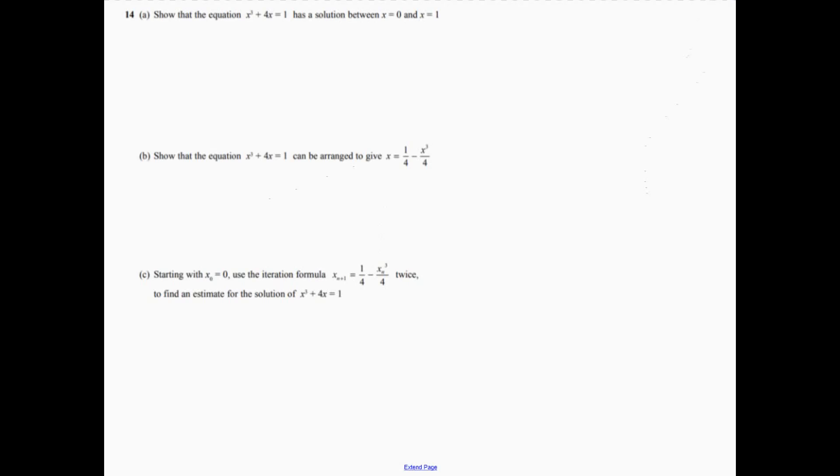Now question 14. So all it wants you to do on part a is substitute in 0. So just go 0 cubed plus 4 times 0. The answer is obviously 0. And then substitute 1 in. So 1 cubed plus 4 times 1 is equal to 5.